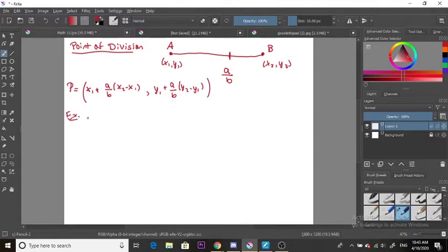Let's say we have coordinate A which is (1, 1) and then we have coordinate B which is (4, 4), and we want to know the point P at two-thirds of the way along.